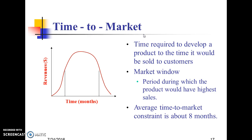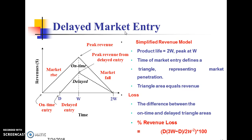Time to Market is one of the major design metrics — it is the time required to develop a product to the point it can be sold to customers. The Market Window is the period during which the product would have its highest sales. The average time-to-market constraint is about 8 months. This window represents time versus revenues, and delayed market entry results in revenue loss.